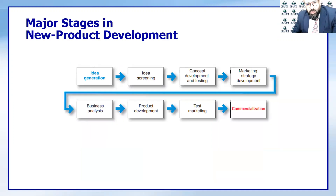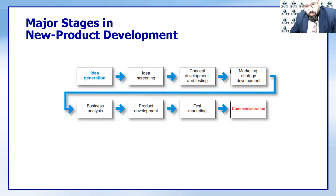Taking a look at the major steps for new product development: it starts with idea generation, then idea screening, then concept development and testing, then marketing strategy development, then business analysis where you look at competitors and SWOT analysis, then product development, then test marketing, and finally commercialization — where you send the product to the market.